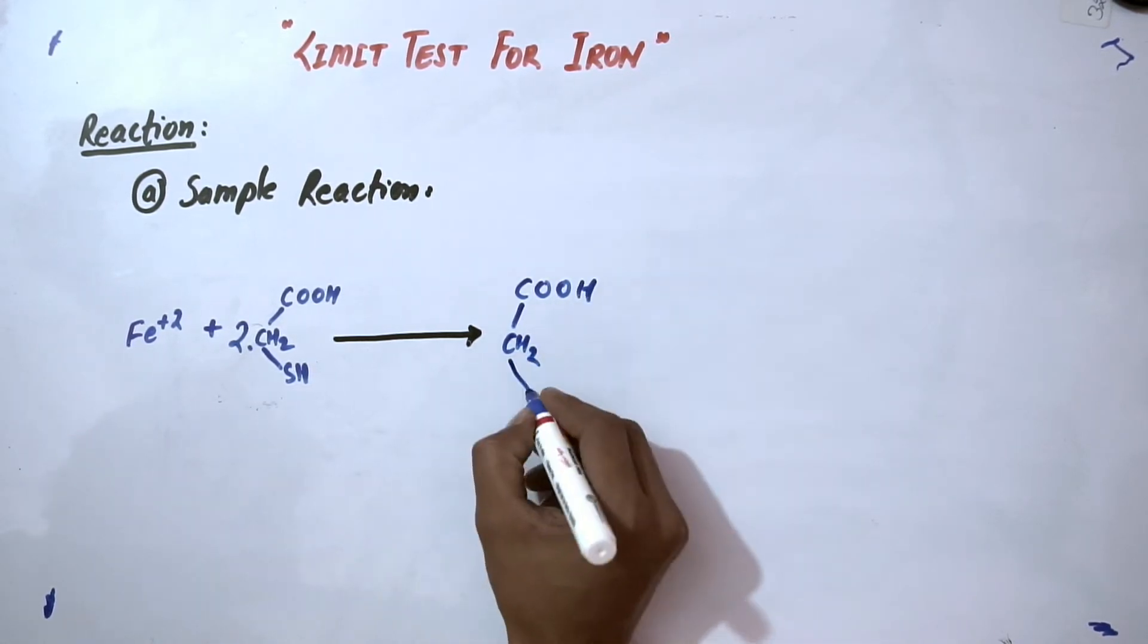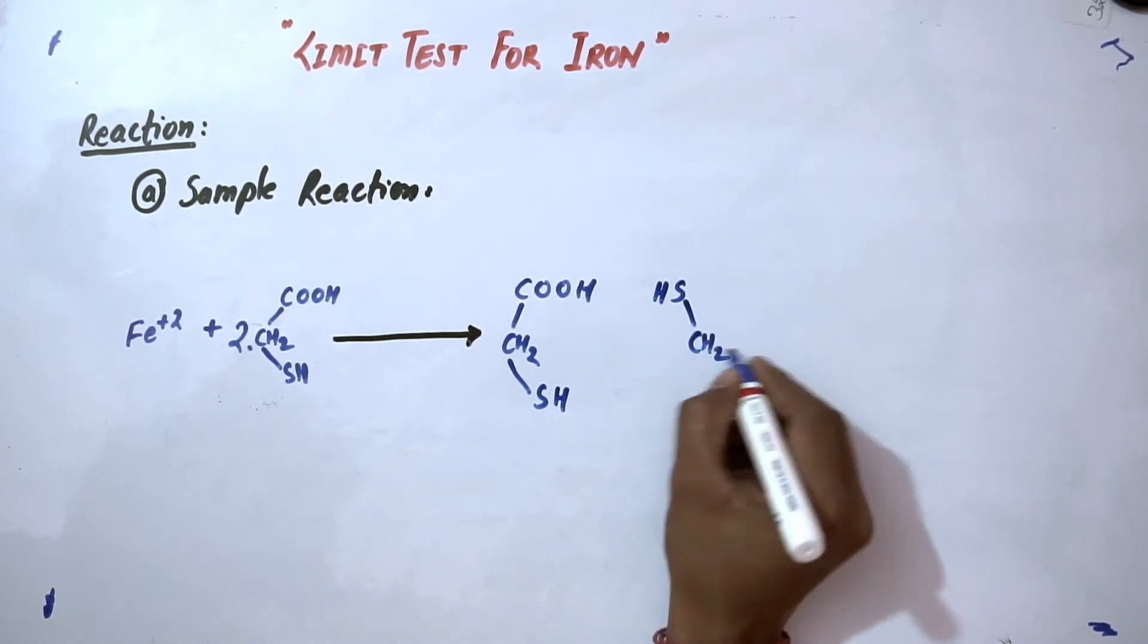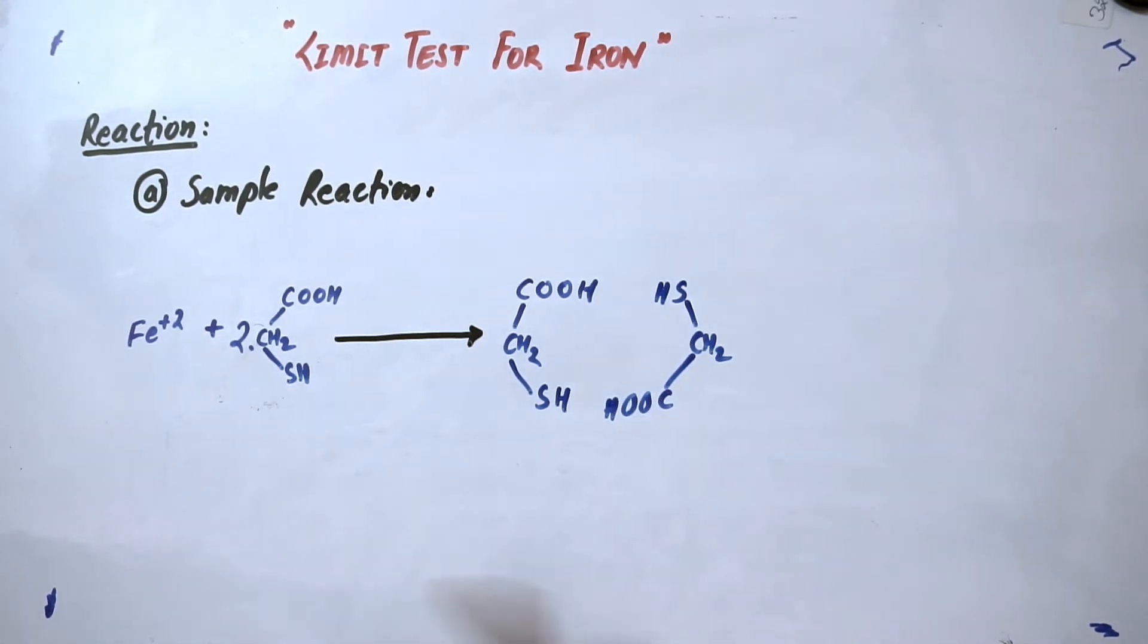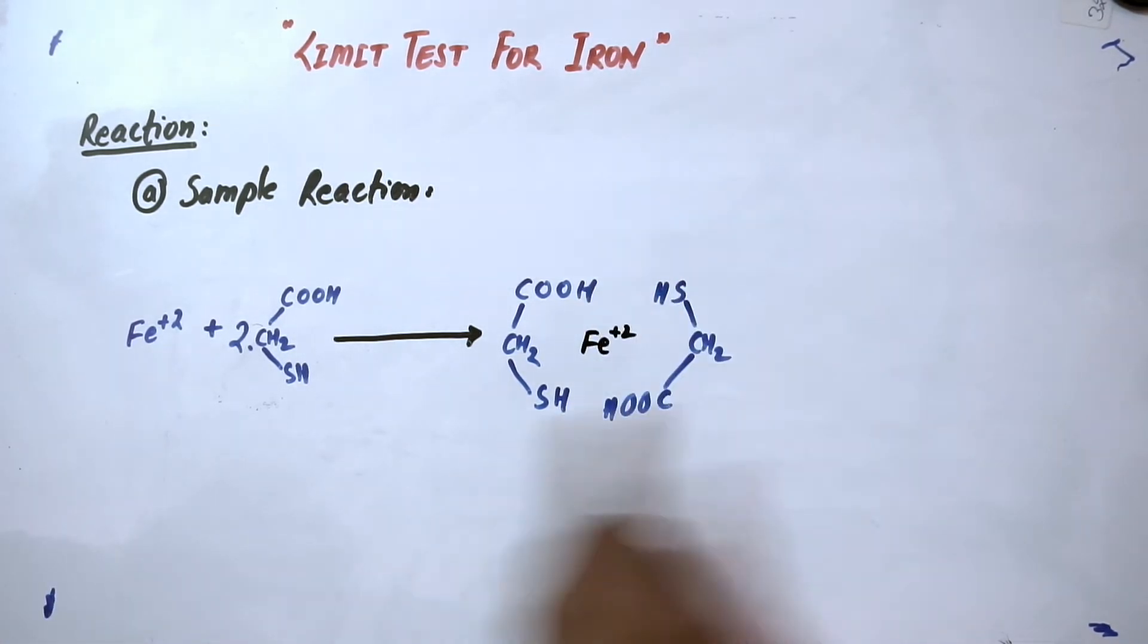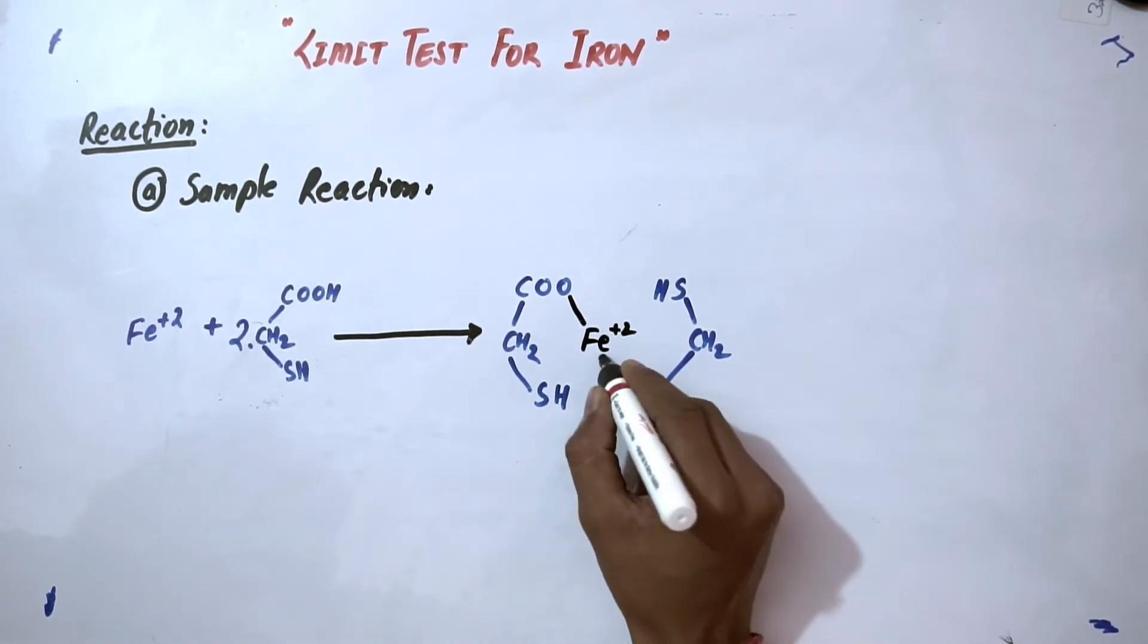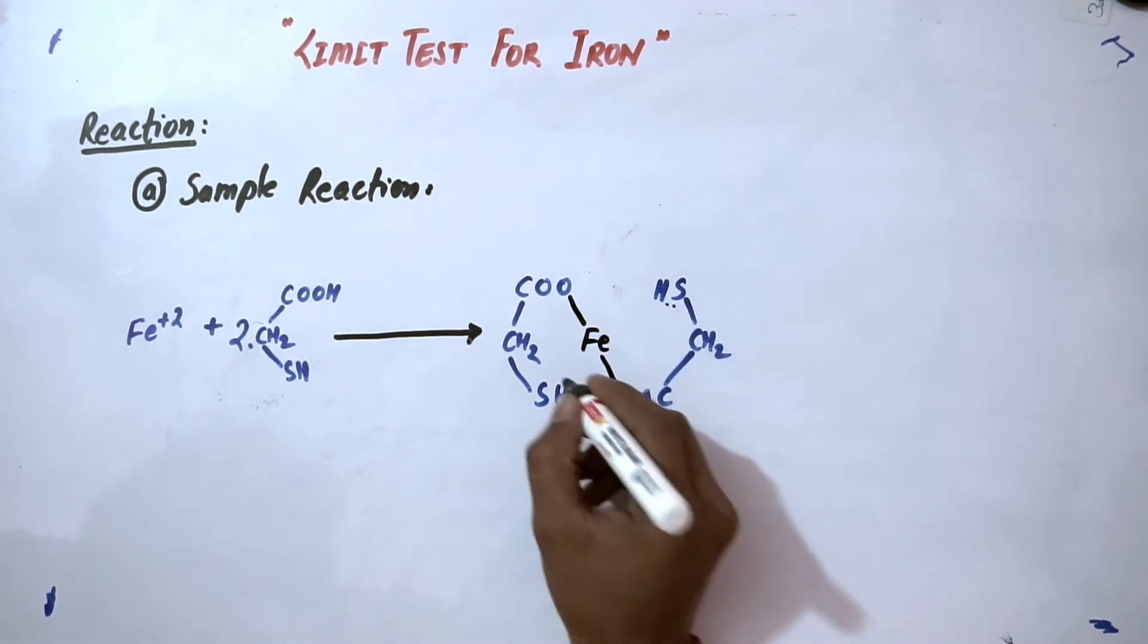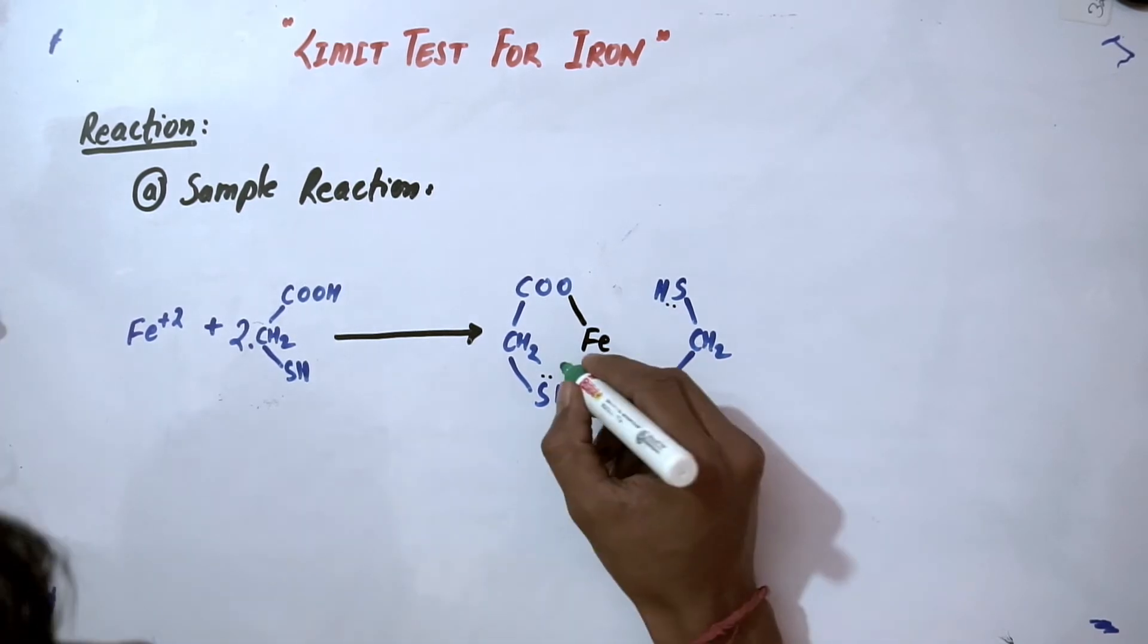We are going to write the same thioglycolic acid molecule and another molecule in opposite direction, just like this. In the center, you put iron. This hydrogen from the carboxylic group will go outside and make a bond with iron. Similarly, another hydrogen will be removed from the carboxylic group and make another bond with iron.